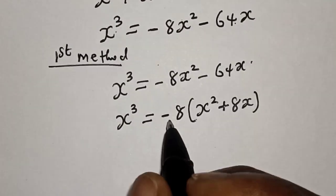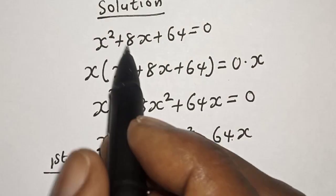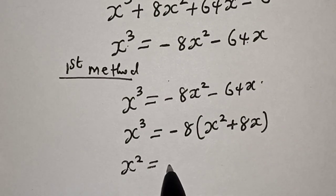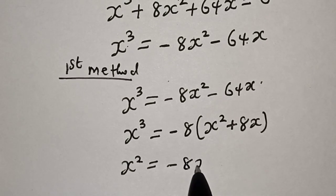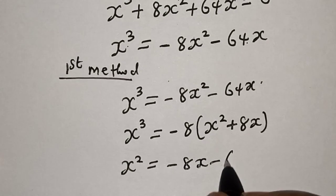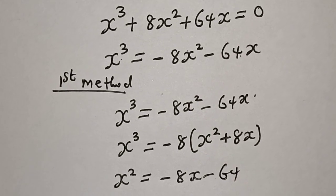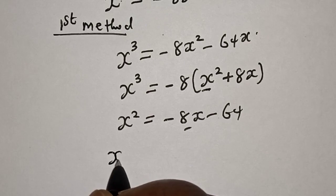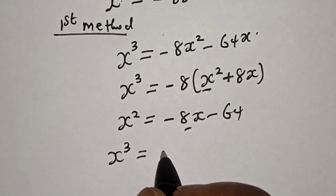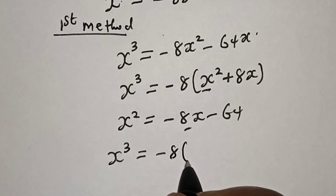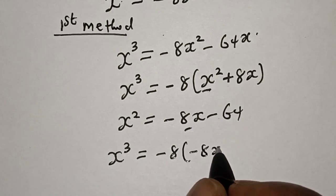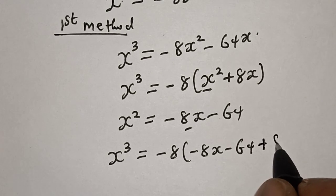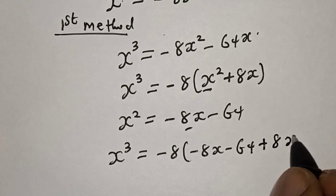From the given equation s² + 8x + 64 = 0, let's make s² the subject of the formula. We have s² = −8x − 64. Now let's substitute: s³ = −8 times (−8x − 64) + 8x.